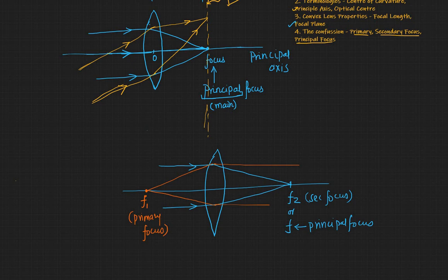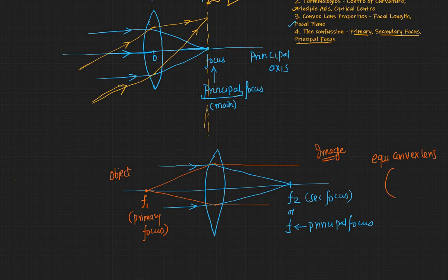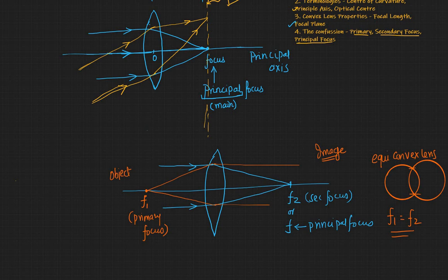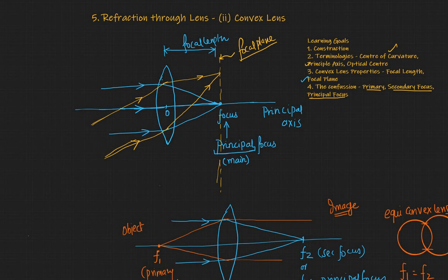Usually we don't worry much about the primary focus because we always keep our object on the left and try to get the image on the right, as we'll see in the next video. In these kinds of lenses, usually called equi-convex lenses, both circles have the same radius, so F1 equals F2. It does not really matter how you keep these lenses. I hope you'll be able to reflect on your learning goals and recap all these points by drawing them in your notebook.